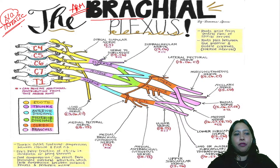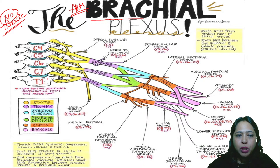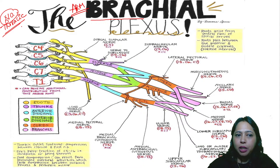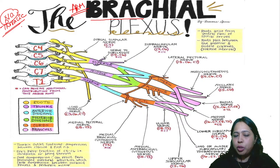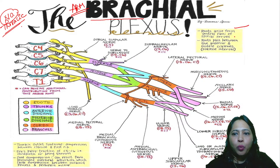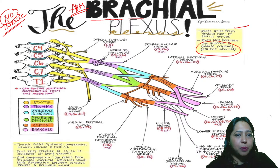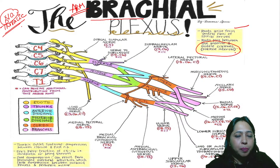The brachial plexus has roots C4, C5, C6, C7, and T1. The ventral rami of these roots form the plexus. Sometimes there can be a C4 contribution — that is called the prefixed type. If there is a T2 contribution, it is called the post-fixed type. These roots arise from the ventral rami of spinal nerves and pass between the anterior and middle scalene muscles.